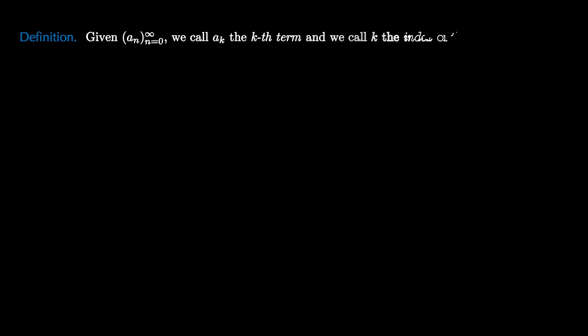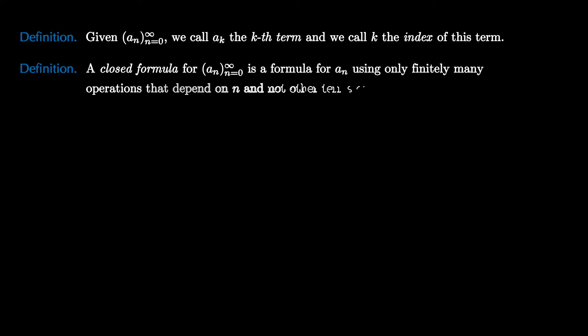One of the gold standards for describing sequences is using a closed formula. Given a sequence, we call aₖ the kth term and we call the number k the index of this term. A closed formula for the sequence aₙ is a formula for aₙ using only finitely many operations that depend on n and not on the other terms of the sequence.